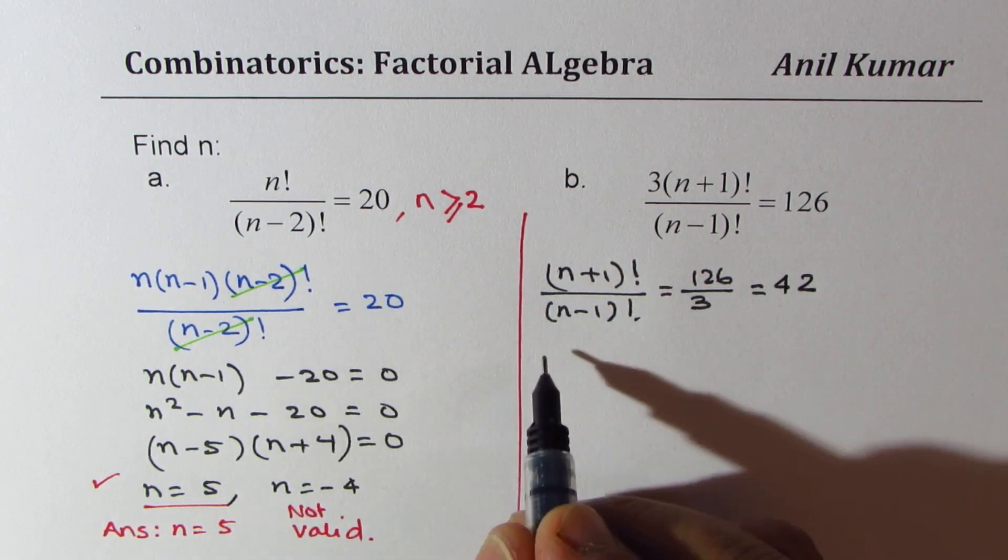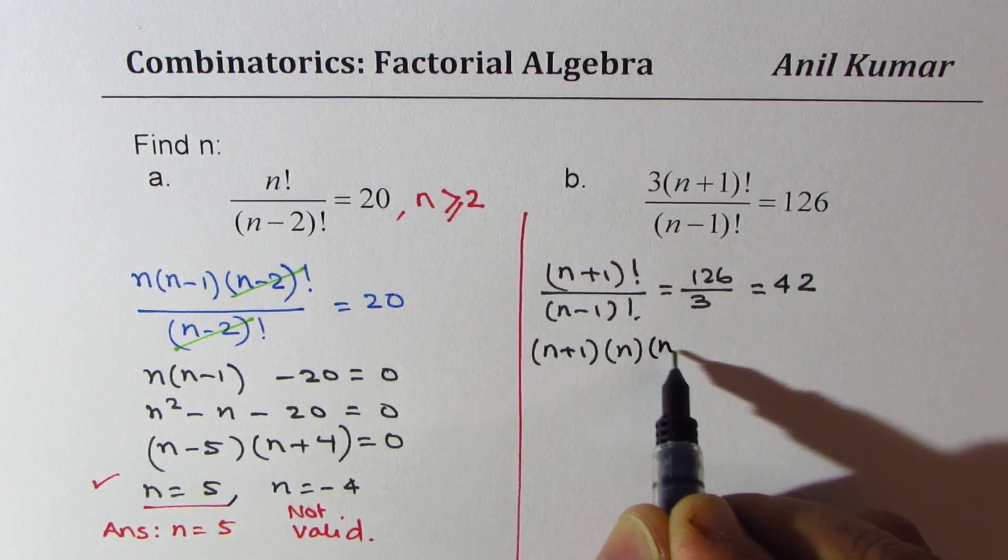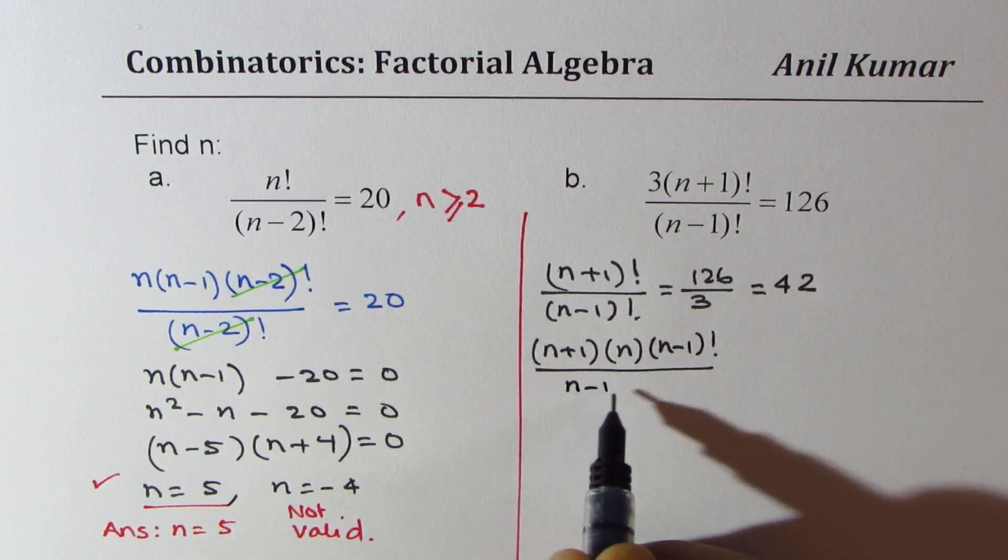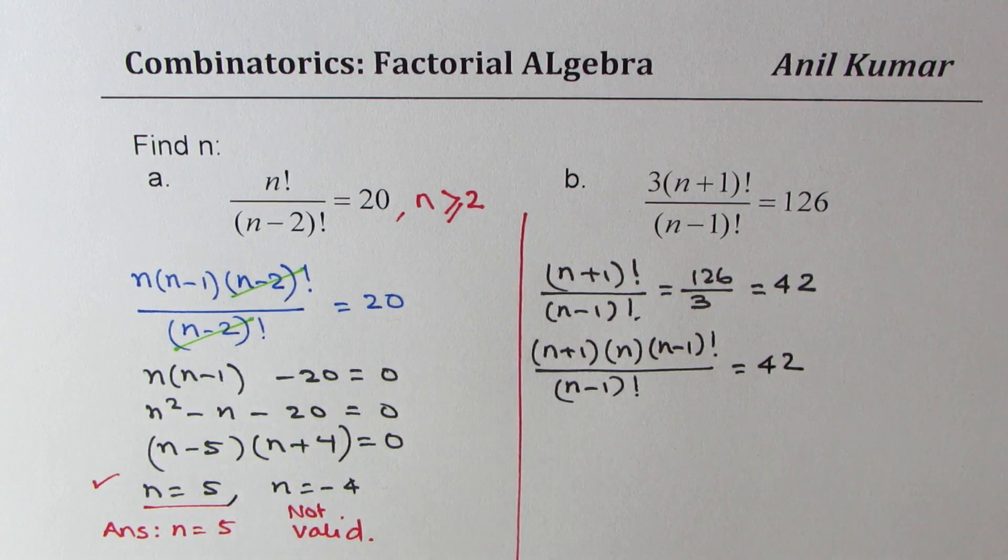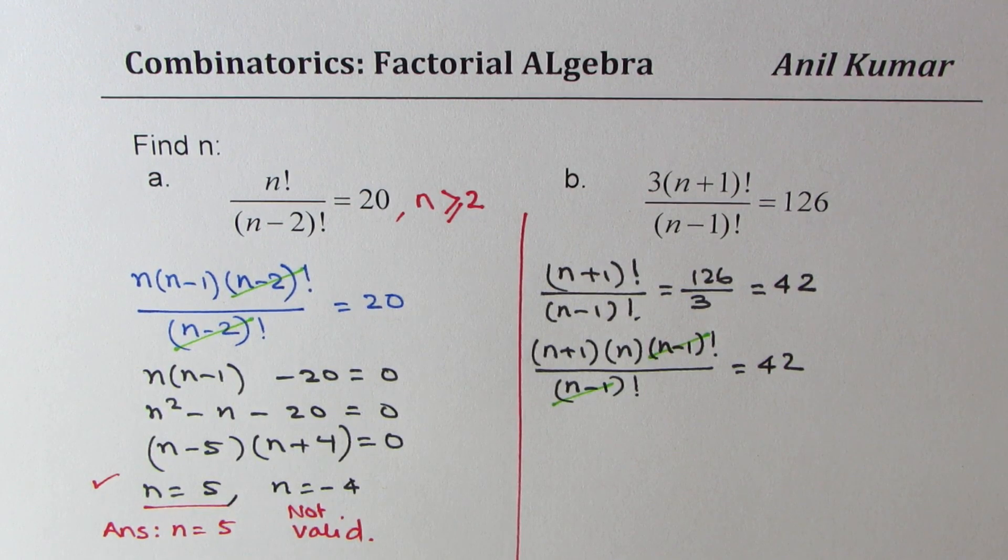(n+1) factorial can be written as (n+1) times n times (n-1) factorial divided by (n-1) factorial equals 42, and (n-1) factorial cancels. You understand this strategy now, correct?